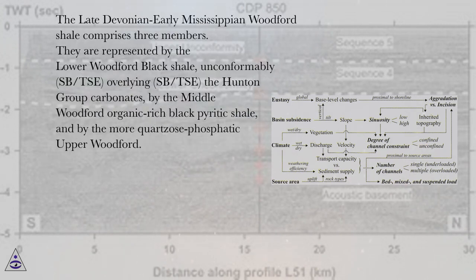Woodford shale. The late Devonian early Mississippian Woodford shale comprises three members. They are represented by the lower Woodford black shale, unconformably (SB-TSE) overlying the Hunton group carbonates, by the middle Woodford organic-rich black pyritic shale, and by the more quartzous phosphatic upper Woodford.